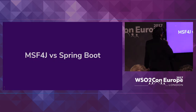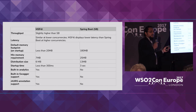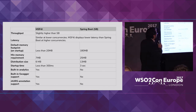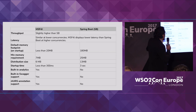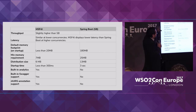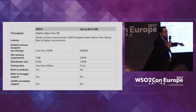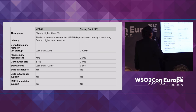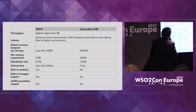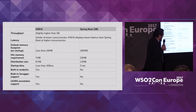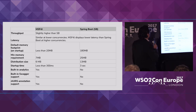Spring Boot is one of the most popular frameworks, so here's a brief comparison. Throughput-wise we are almost similar. For latency, MSF4J displays lower latency at higher concurrency. On startup memory footprint there is a big advantage — minimum memory requirement is 7 MB; we've done benchmark testing by reducing memory down to that. Distribution size is 6 MB. Standard annotations, Swagger annotations — all out of the box in MSF4J.